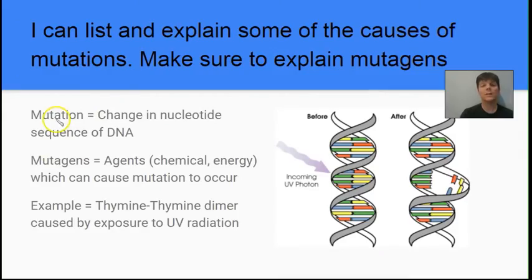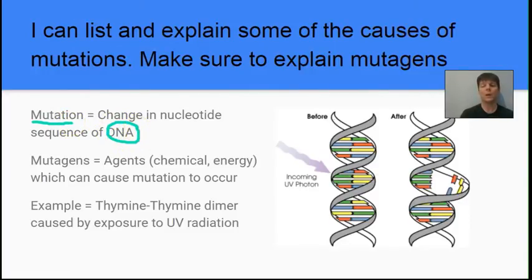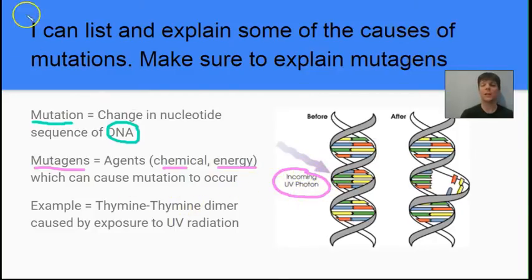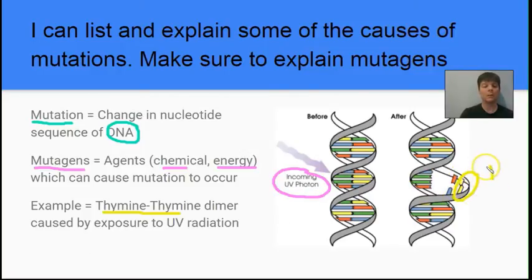Our next learning target is to list and explain some causes of mutations, and we'll be discussing mutagens along the way. A mutation is a change in the nucleotide sequence of a DNA molecule — for example, ATGC might turn into AGGC. This could lead to changes in an RNA sequence which could change a protein. Mutagens are agents, either chemical or energy-based, which can cause a mutation to occur. Ultraviolet radiation is an example of a mutagen.